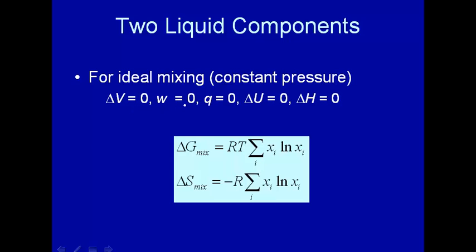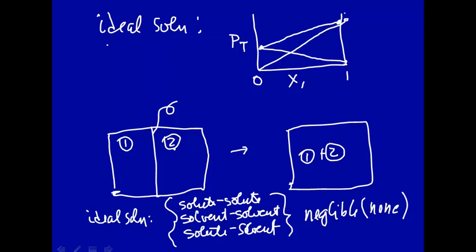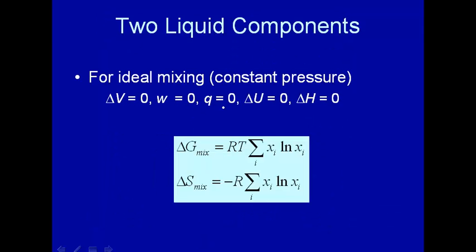And if you look at the work, work is PdV or P delta V at constant pressure, that work is 0. Since there's no interaction—no interaction between the solute and solvent, or solvent-solvent, or solute-solute—what that means is that there should be no heat generated, so q = 0, ΔU = 0, and ΔH = 0. All these quantities are equal to 0 for an ideal solution when you mix the two components.